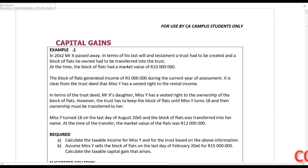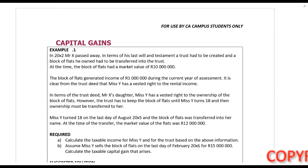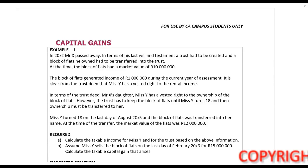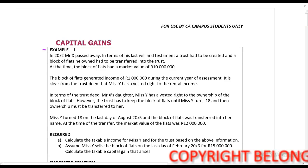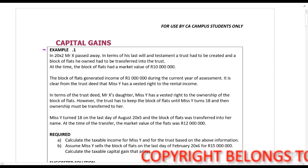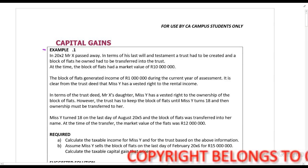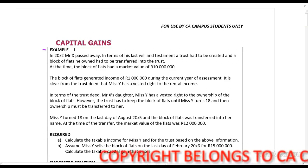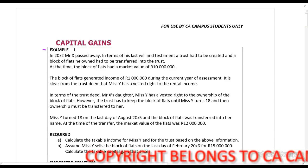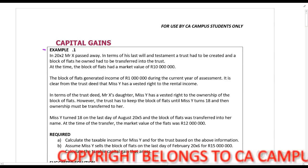In this lecture example, we look at the capital gains tax implications for trusts, so paragraph 80. Now let's start with this example. It says in 20X2, Mr. X passed away. In terms of his last will and testament, a trust had to be created and a block of flats he owned had to be transferred into the trust. At the time,